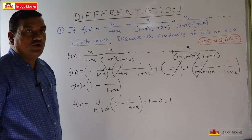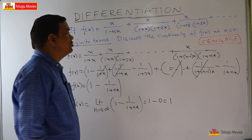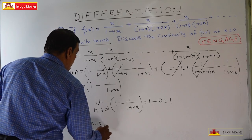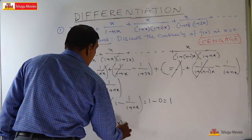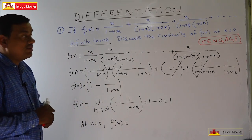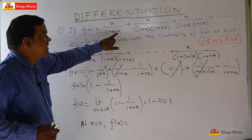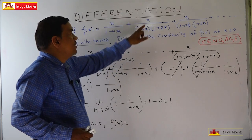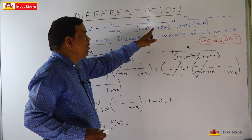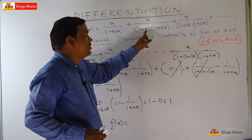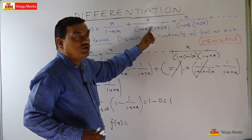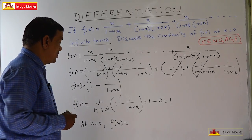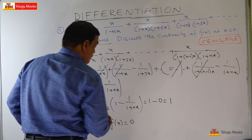At exactly x=0, substituting into f(x): 0/(1+0) + 0/(1·1) + ... = 0. So f(0) = 0. This means we can write f(x) as a piecewise function: f(x) = 0 when x=0, and f(x) = 1 when x ≠ 0.